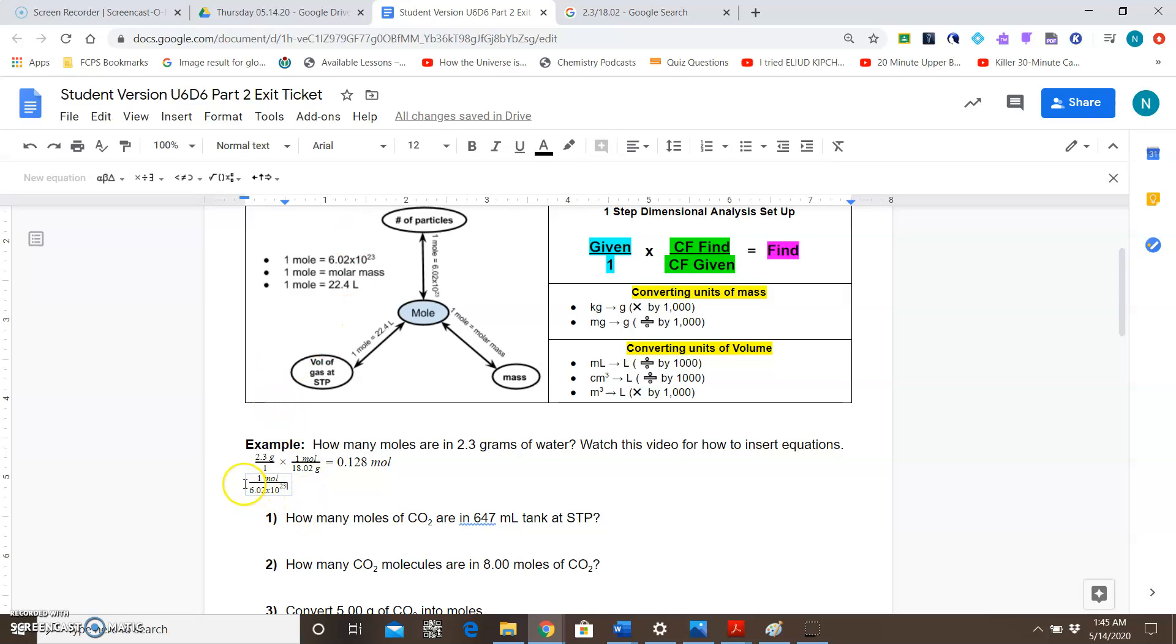So just to repeat that process, I type 6.02 and then X for my multiplication. Before I type the 10, I went here, clicked on X to the power of B. I click on that. I typed in 10 first and then I hit over to the right to get the power. All right. So that's how something like that would look.